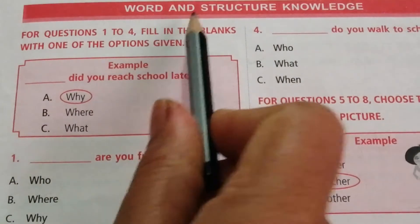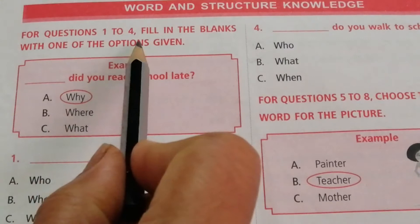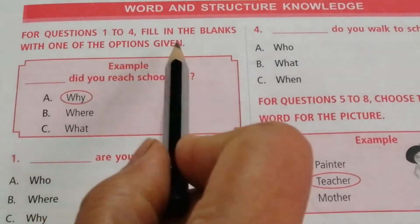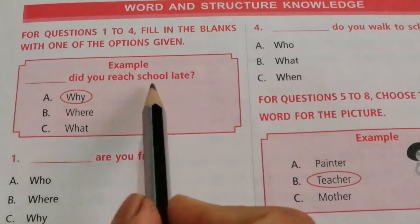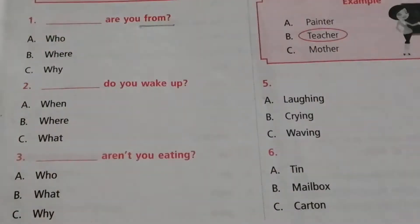First topic is word and structure knowledge. For questions 1 to 4, fill in the blanks with one of the options given. Question 1: ___ are you from? 'From' is the keyword. The options are who, where, why. The answer is B — where. Where are you from?